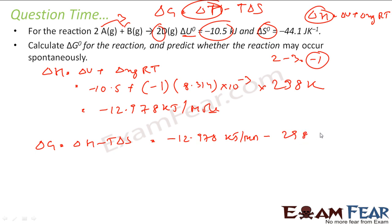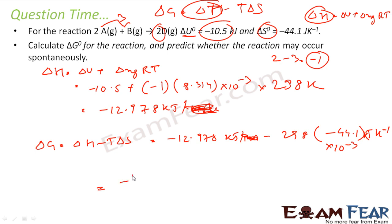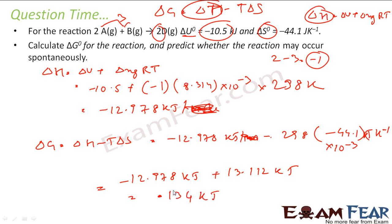Delta H is minus 12.978 kilojoules. Minus T is 298 K, into delta S which is minus 44.1 joules per Kelvin — converting to kilojoules by multiplying by 10 to the power minus 3. Solving this: minus 12.978 kilojoules plus 13.112 kilojoules gives 0.134 kilojoules, or approximately 0.113 kilojoules.